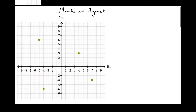In this video, we're going to have a look at how to find the modulus and argument of a complex number. First of all, we should define what modulus means. The modulus of a complex number is the distance from the origin of that complex number.